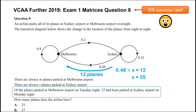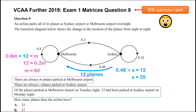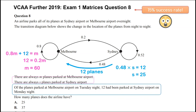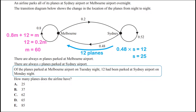Now we need to find the number of planes at Melbourne airport, which is always m. Using the other side of the diagram, we set up an equation for m: 0.8 of those Melbourne planes return to Melbourne, and we already know 12 of the Sydney planes go to Melbourne. That total always equals m, so solving — either on the CAS or by hand — we find m equals 60, giving a total of 85 planes. Only 15% of students got that question correct.